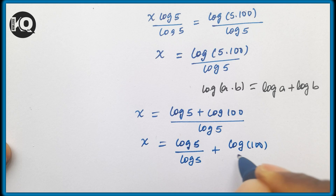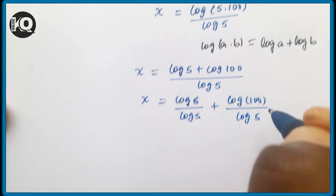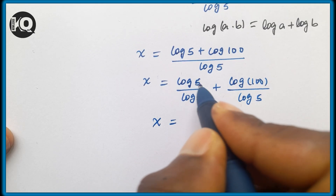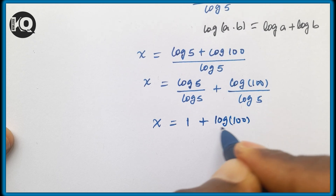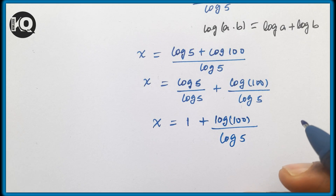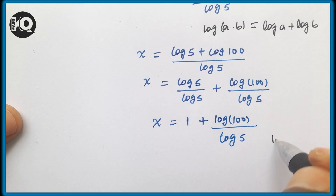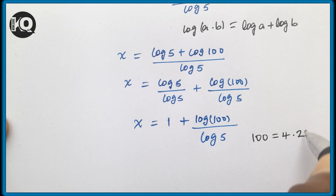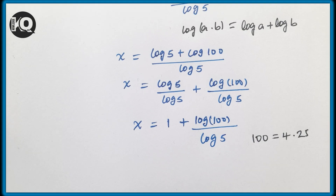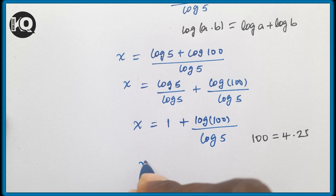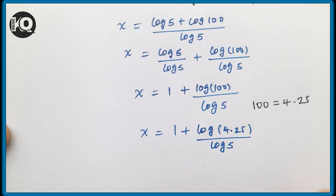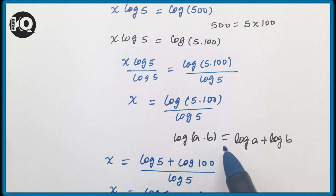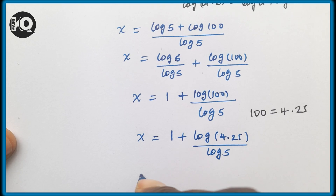Applying the product rule, x = [log(5) + log(100)] ÷ log(5). This gives x = log(5)/log(5) + log(100)/log(5), and since log(5)/log(5) = 1, we have x = 1 + log(100)/log(5). Now 100 can be written as 4 times 25, so x = 1 + log(4 × 25)/log(5).